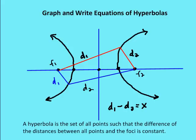So just as a refresher, a hyperbola is a set of all points such that the difference of the distances between all points and the foci is constant. So if I say d1 and d2, if I subtract d2 from d1 I get some value. It really should be the absolute value of d1 minus d2 — that difference is going to be some constant value. Here are focus 1 and focus 2, and that difference is constant.